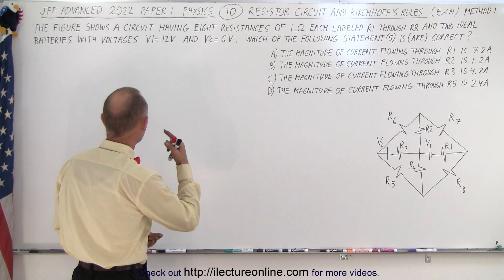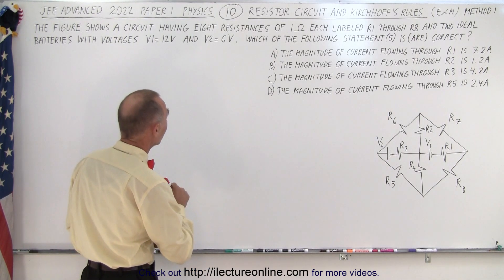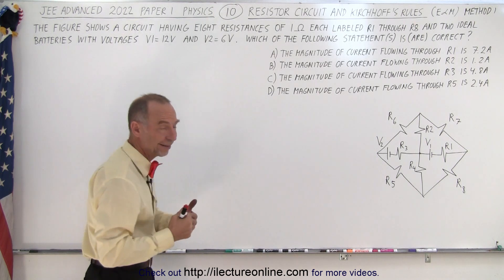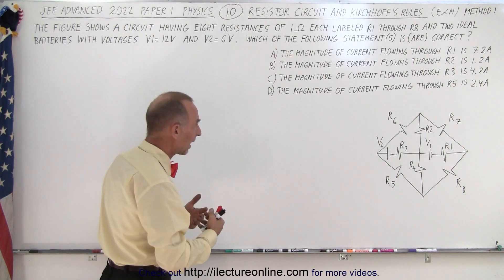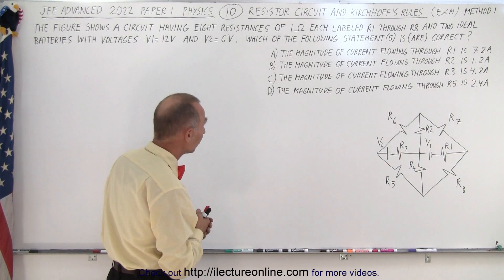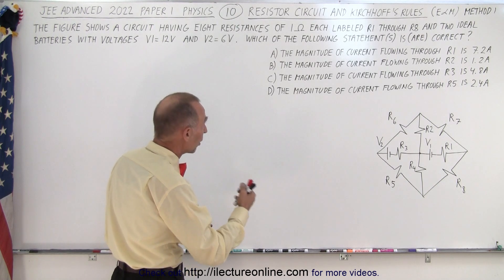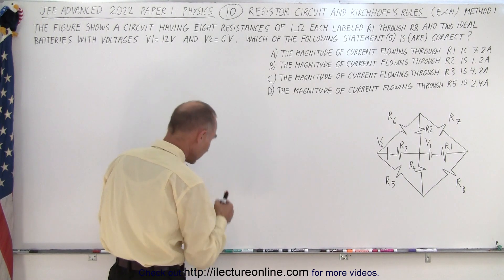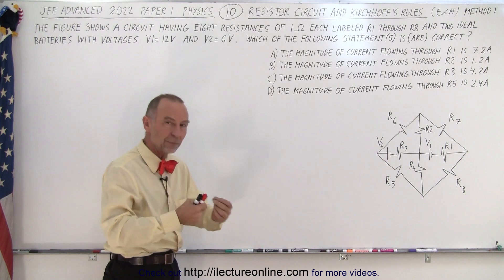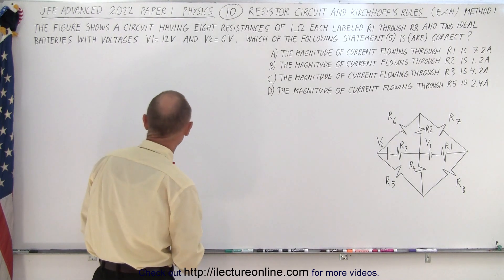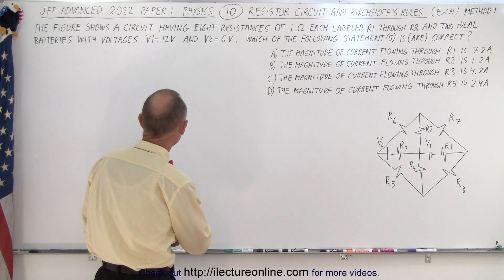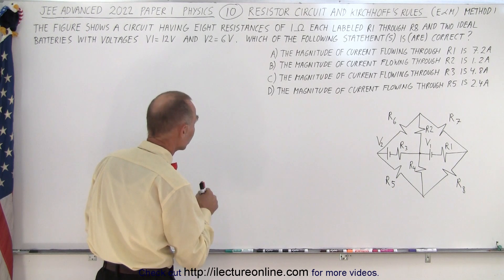So let's read the problem. It's very straightforward. The figure shows a circuit having eight resistances of one ohm each. So at least every resistor has the same resistance. They're labeled R1 through R8 and there are two ideal batteries which means that they will keep the same voltage regardless of the current draw with voltages V1 equals 12 volts and V2 equals 6 volts.